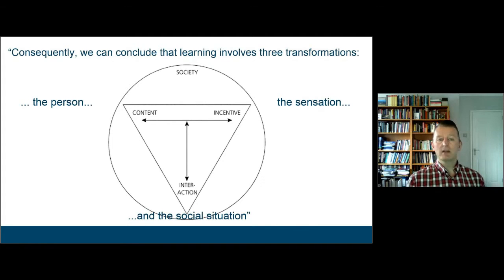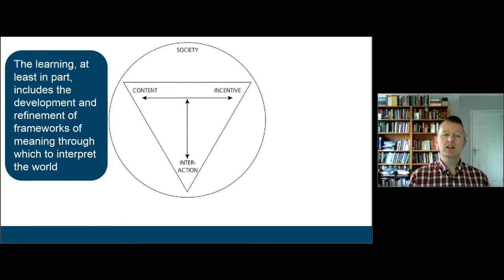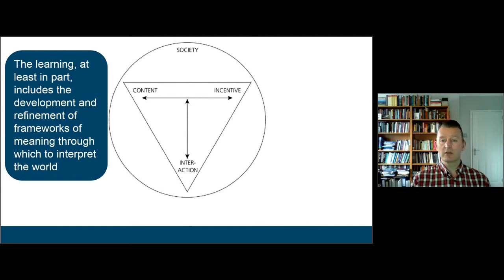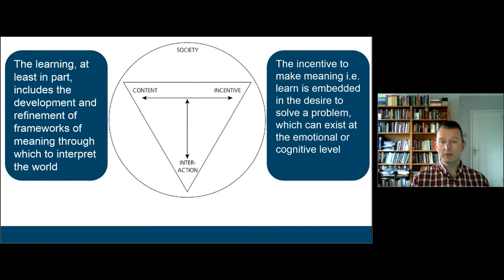We can map these three dimensions against one another. In terms of the history classroom, when we engage students with the content, we have to recognise that it's transformational to the extent that children are developing and refining frameworks of meaning — new resources with which to interpret history. When we think about incentive, we need to provide some inherent reason why they will engage and invest effort into thinking through the history we're presenting. The incentive to make meaning is embedded in the desire to solve a problem, and one of the values of simulations and role plays is that we can present people with problems and give them time to struggle through them.